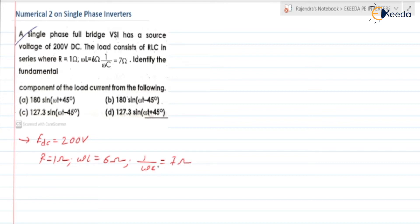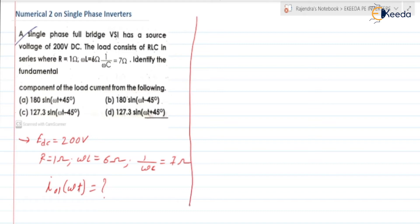Identify the fundamental component of the load current from the following options. So our task is to find I₀₁(ωt). Here the load we are having is an RLC load, and we know the expression for I₀(ωt).